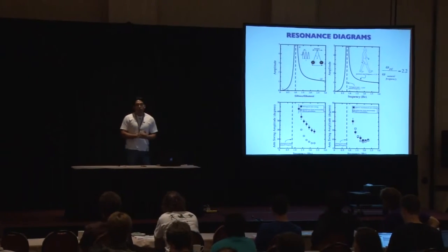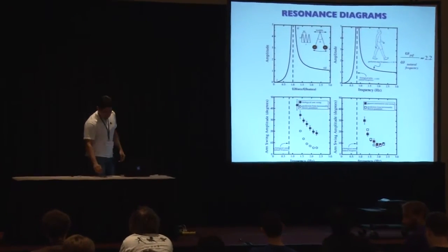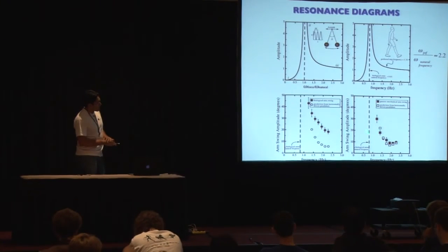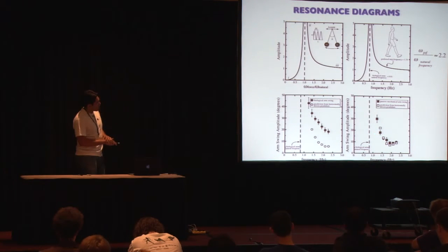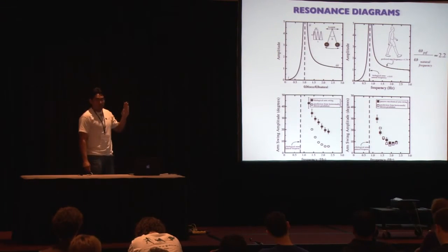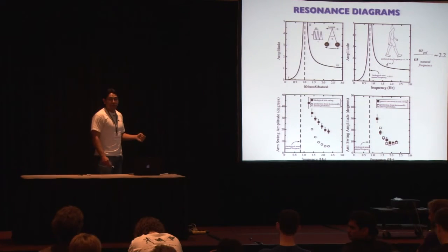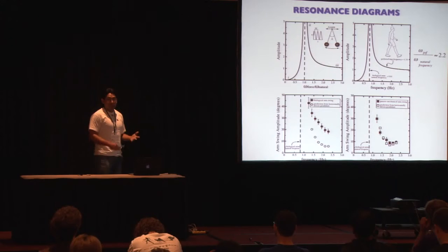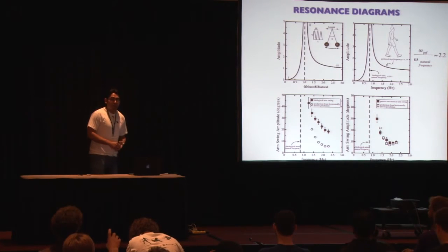An audience member asked for clarification on the final graph, noting the artificial arms were matched to the same inertia as the biological arms, but the theoretical prediction curve appeared to dip up rather than always decreasing. The presenter explained that the prediction is based on the actual kinematic movement of the shoulder — specifically, the amplitude of the horizontal shoulder marker and the frequency of walking are both input as parameters. There are essentially two parameters: the forcing frequency and the shoulder displacement amplitude.